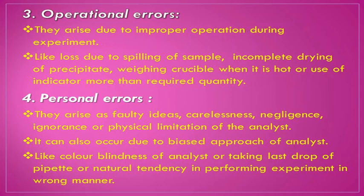So up till now, we have seen the determinate errors — those errors which we can find out and locate, which are of four types: instrumental, methodic, operational, and personal. If we can minimize these errors, then your result will be proper and correct. Whenever you are doing sampling, performing your experiment, and finally doing your calculation, you should follow proper steps and proper ideas. Then and then only you will get correct result. We will see further types of errors in our next lecture. Till then, take care and stay at home safe. Thank you.